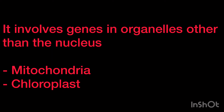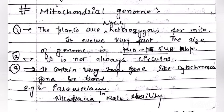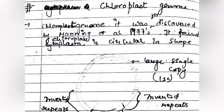Cytoplasmic factors of extra nuclear inheritance include mitochondria and chloroplast. Mitochondria are organelles which function to perform energy production as a result of cellular respiration. In plants, their size is generally 140 to 548 base pairs, and they are heterozygous circular or linear DNAs.